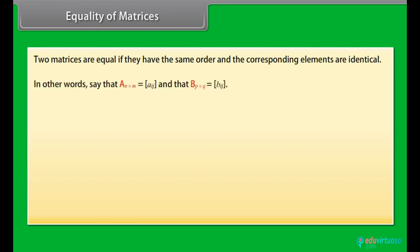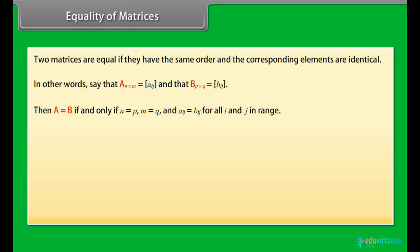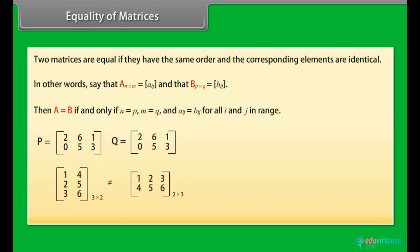More formally, matrix A (n by m) equals matrix B (p by q) if and only if n equals p, m equals q, and aᵢⱼ equals bᵢⱼ for all i and j. Matrices P and Q are equal only if they share the same order and elements. Here are two matrices which are not equal even though they have the same elements.